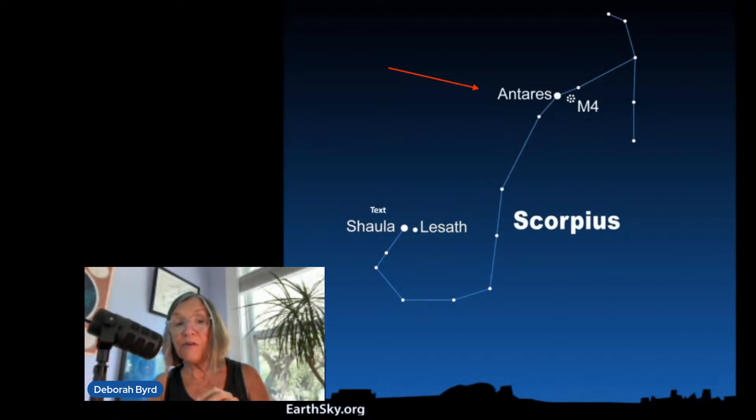So first, you'll want to look for the bright red star called Antares. It's the brightest star in Scorpius, considered the heart of the Scorpion. It's about 550 light years away, and it's very easy to spot within the Scorpion pattern.